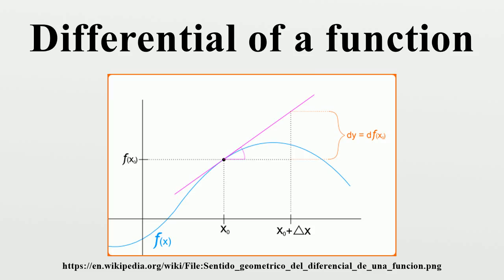For functions of more than one independent variable, the partial differential of y with respect to any one of the variables x1 is the principal part of the change in y resulting from a change delta x1 in that one variable. The partial differential therefore involves the partial derivative of y with respect to x1. The sum of the partial differentials with respect to all of the independent variables is the total differential, which is the principal part of the change in y resulting from changes in the independent variables.